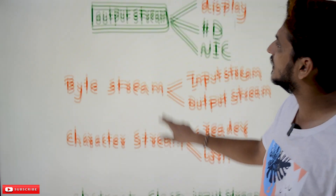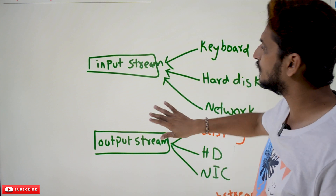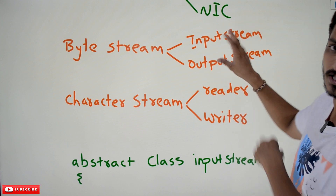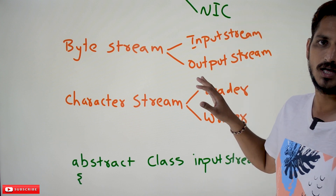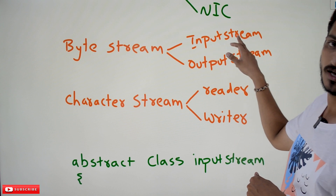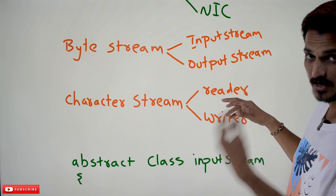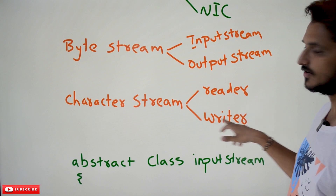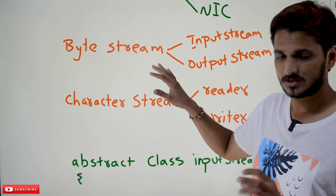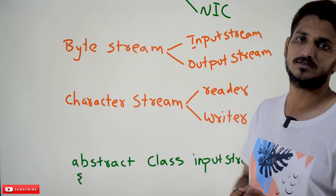Whenever data comes to the input stream, in order to read it we have some classes provided. For byte streams, these are the super classes — the first classes given for us, available in the documentation and in Java. Input stream is an abstract class. Output stream is an abstract class. Similarly, for character streams, the first classes developed and given to us are the Reader class and Writer class. Most of the times we are going to use byte streams. In this class, we are going to show you the InputStream class and understand a few important points that will be used in our next classes.